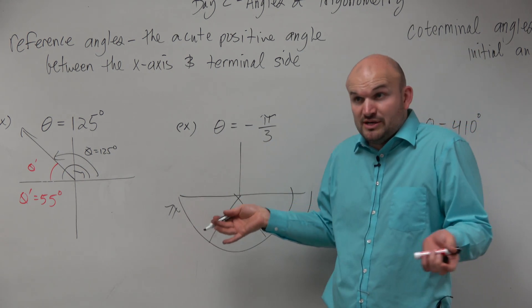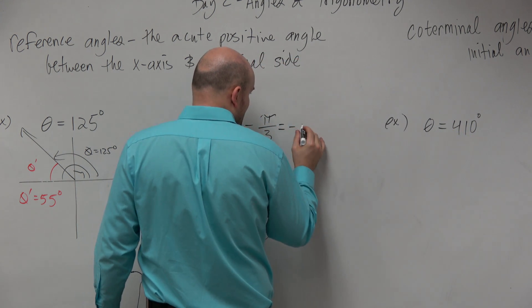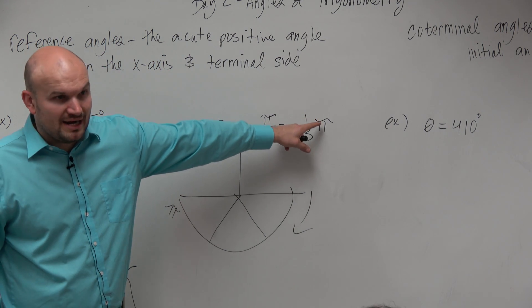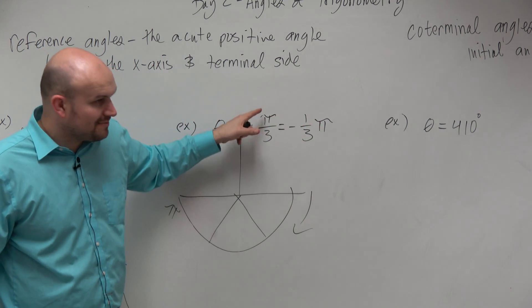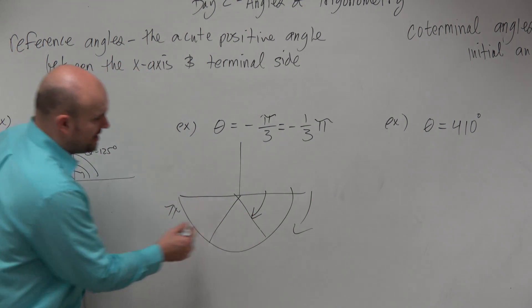Now, how many of these thirds are we traveling? One third. We're just going one third of π. One third of π is the same thing as π/3. So we're just traveling from here to here, right? That's your angle.